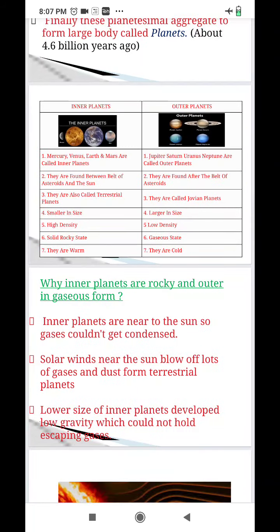Now, the inner planets, they were solid because solar winds took away the most lighter material to the outer planets where heavier material remained in the inner planets. That's why they are in rocky form. So, this is how planets are formed and inner planets and outer planets and differentiation between these two.